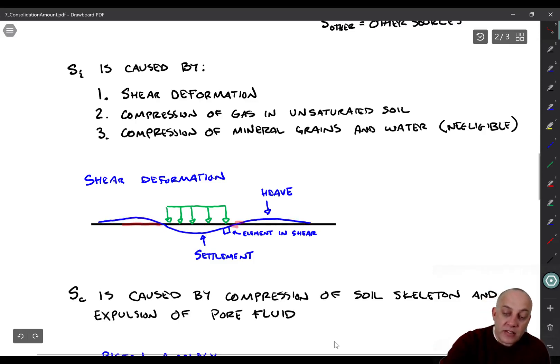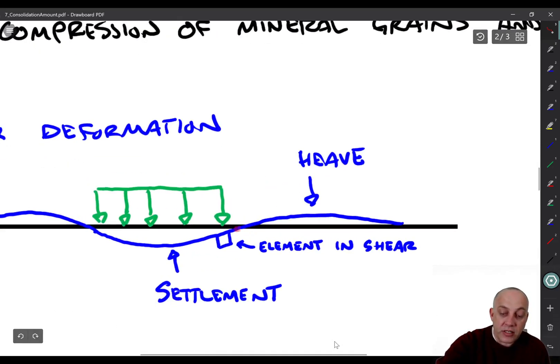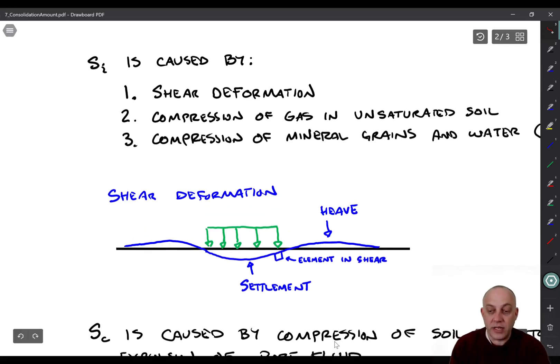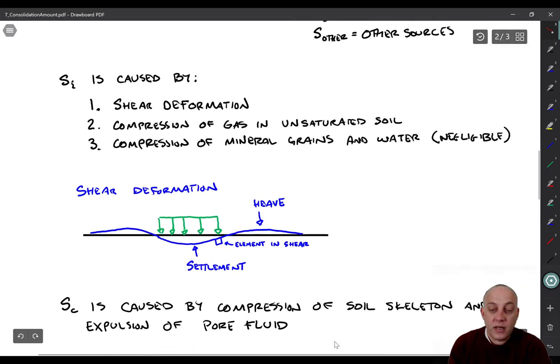So that looks like this diagram right here, right? You put loading in one spot right there, you get settlement right beneath that spot, but this settlement right there is not due to volume change, it's because there's some heave over here that compensates for it, so the volume of the soil stays the same, and you can see this element right there, I'll zoom in on it, that little soil element actually is in a state of shear, not volume change, right? It's just, you know, it's deforming in an angular way, not in a compressive way.